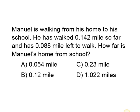Our first problem says Manuel is walking from his home to his school. He has walked 0.142 miles so far and has 0.088 mile left to walk. How far is Manuel's home from school? Answer choice A is 0.054 mile, B is 0.12 mile, C is 0.23 mile, and D is 1.022 miles.